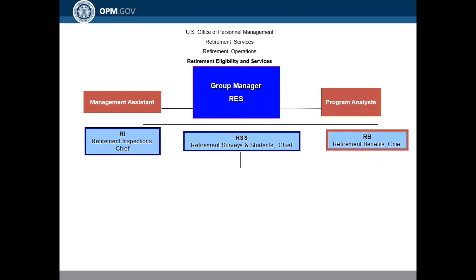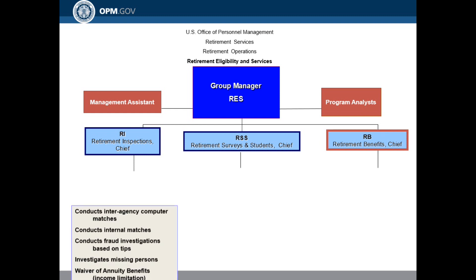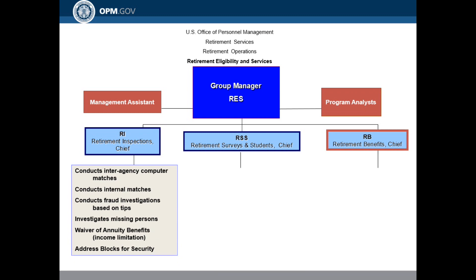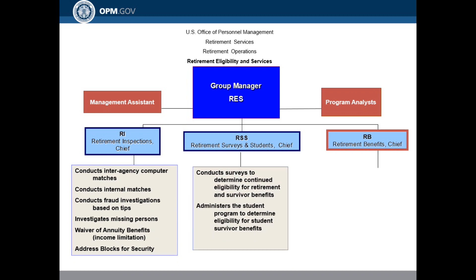Within Retirement Eligibility Services, or RES, we have the Group Manager along with two Program Analysts. Underneath the Group Manager, not shown in the Organization Chart, we have a Deputy Group Manager. Under the Deputy Group Manager, we have three Chiefs. Ms. Brookins is Chief for Retirement Inspections, which conducts interagency computer matches, internal matches, fraud investigations based on fraud tips, investigates missing persons, processes requests for waiver of annuity benefits, and addresses blocks for security purposes.